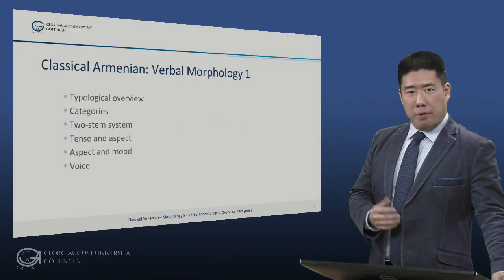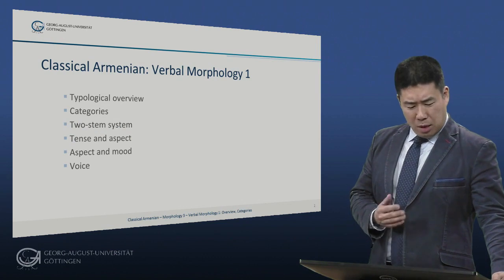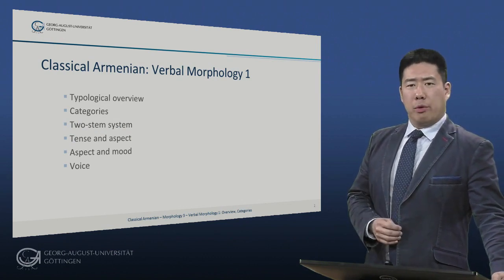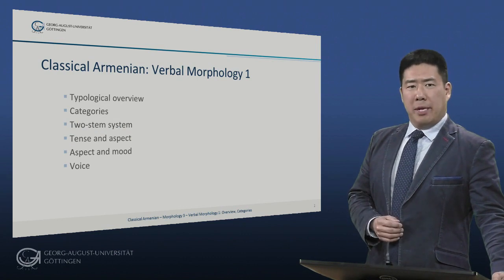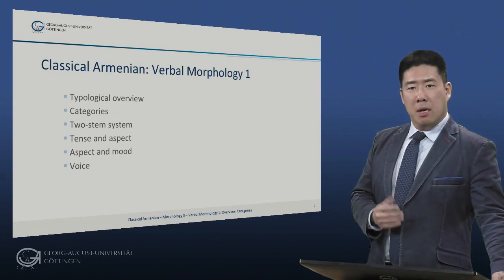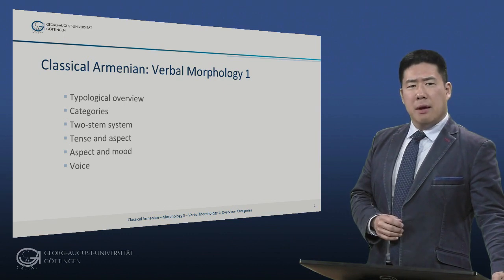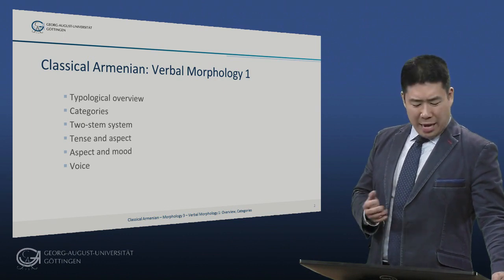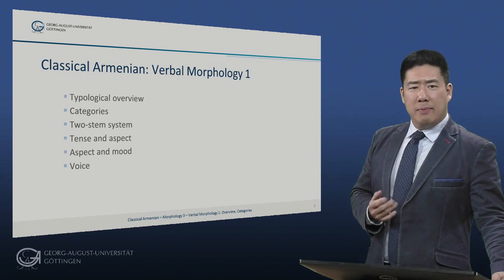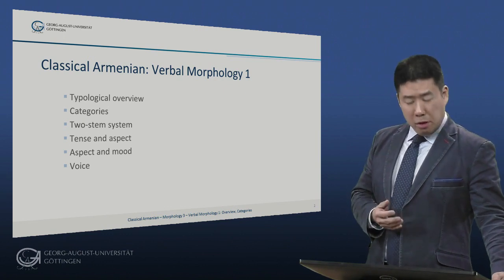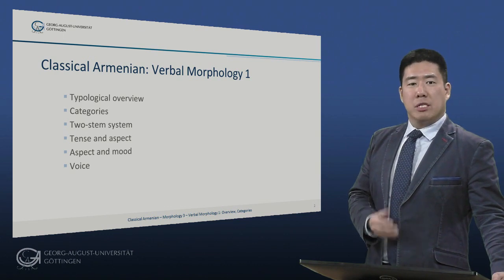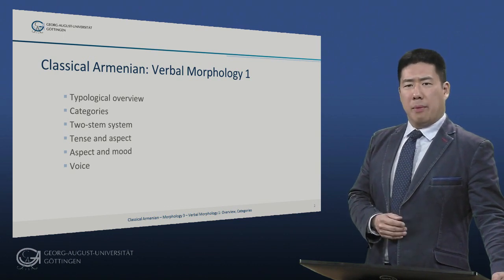Here is the roadmap for this video. We will begin with a typological overview and the relevant categories of the classical Armenian verb. We will look at the two-stem system of verbal inflection, then examine the interaction of the categories of tense and aspect, and of aspect and mood. We will conclude by looking at the different ways in which voice is expressed in the classical Armenian verb.